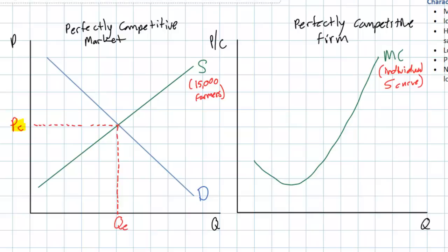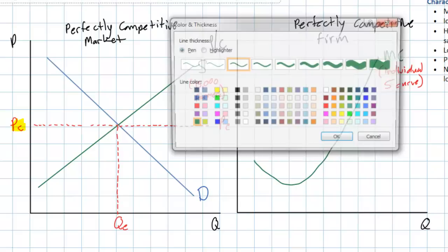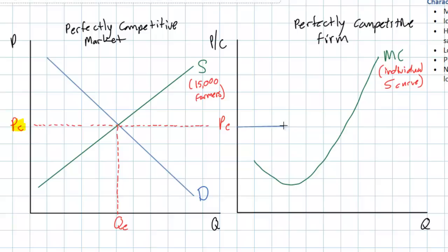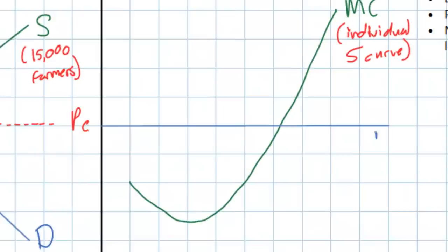On the other hand, if one dairy farmer tried to sell his milk at any price lower than the equilibrium price, every single buyer of milk would want to buy from that one farmer. So any increase in price leads to an infinite decrease in quantity demanded, while any decrease in price leads to a nearly infinite increase in quantity demanded. This means the demand for an individual dairy farmer's milk is perfectly elastic — horizontal at the equilibrium price determined by the market.